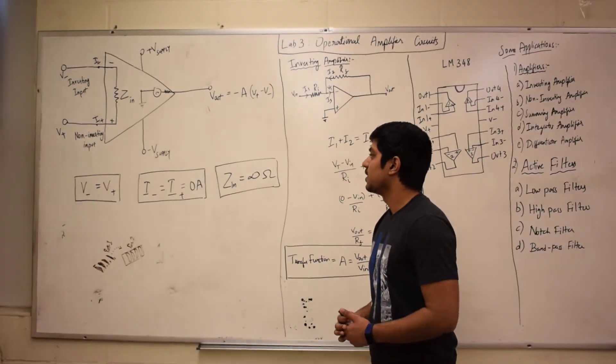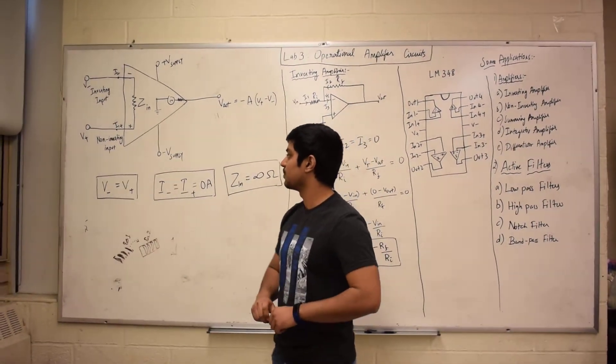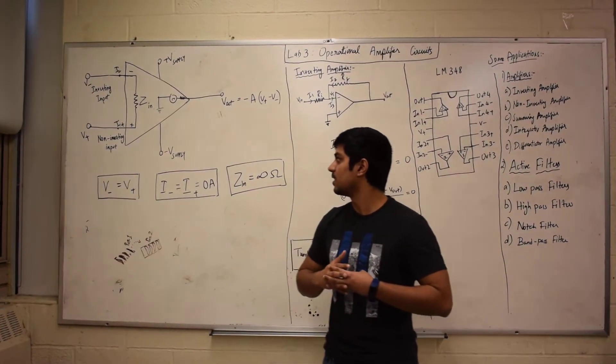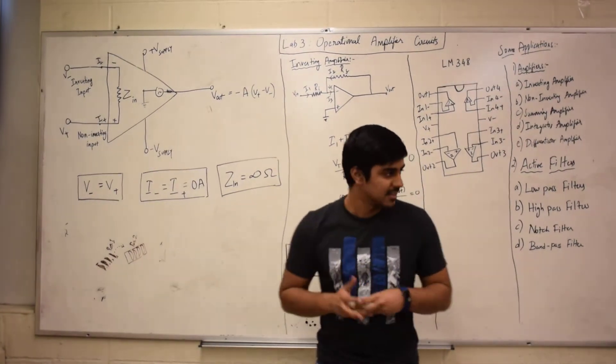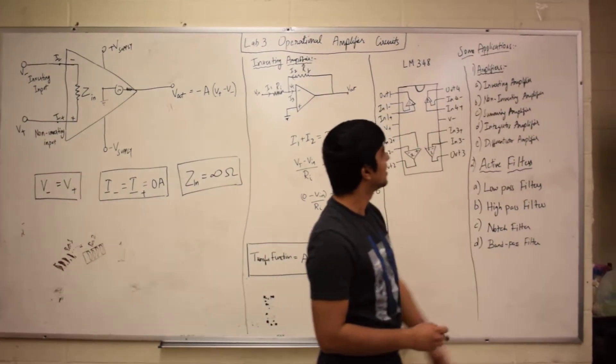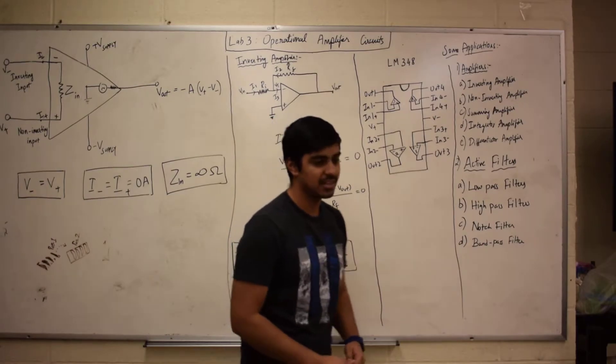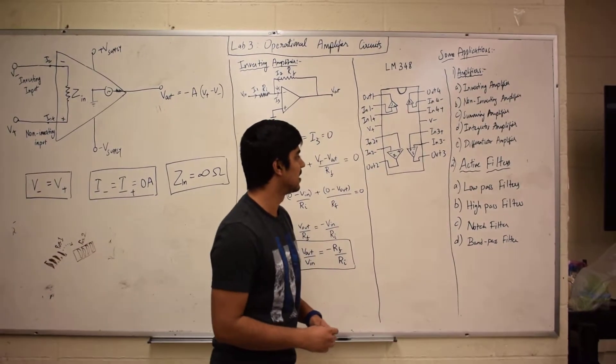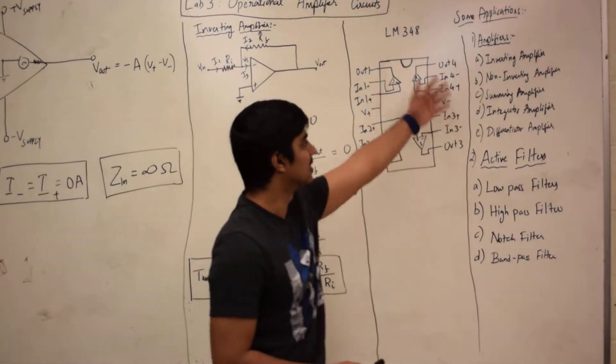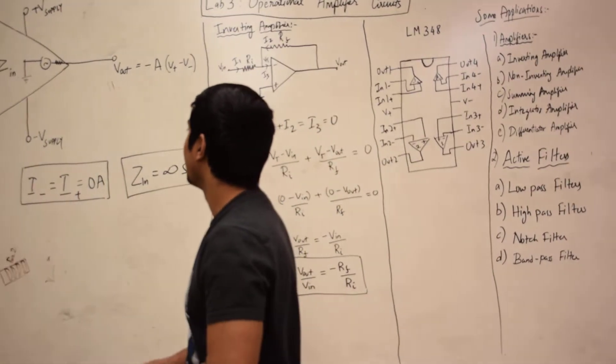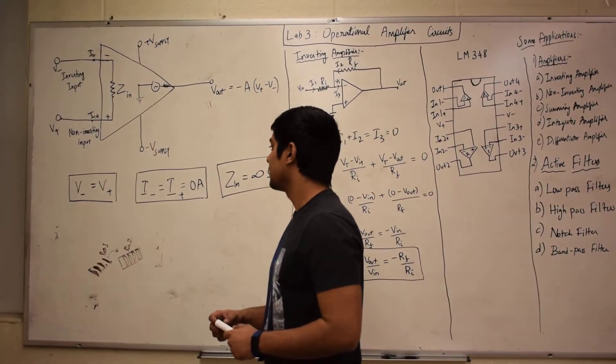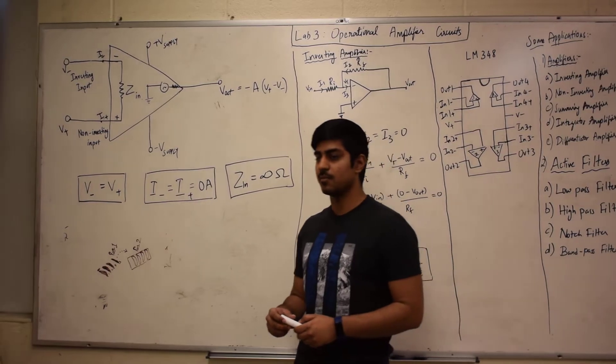Op-amps are primarily used for a lot of things. As you can see here, they're used for amplifying your outputs and they're also used for filters. For op-amps, there are three main things you have to remember.